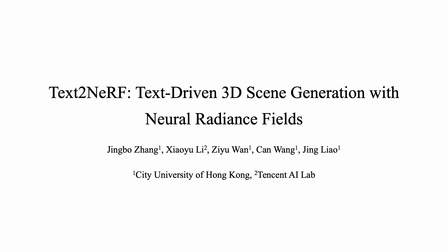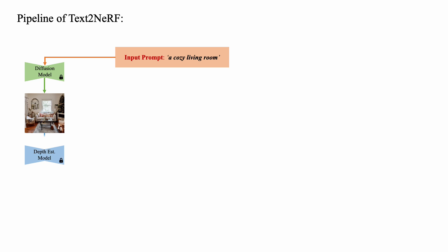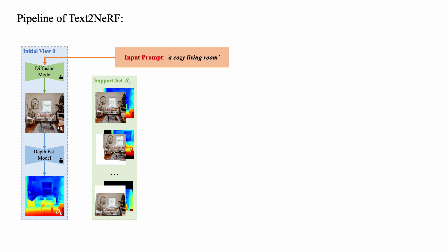We propose Text2NeRF for text-driven 3D scene generation with neural radiance fields. Given an input text prompt — for example, 'a cozy living room' — we first employ a pre-trained text-to-image diffusion model to generate a text-related initial view as the content prior, and employ a monocular depth estimation model on the generated image to infer the geometric prior. We then warp the initial view into a support set via depth-image-based rendering.